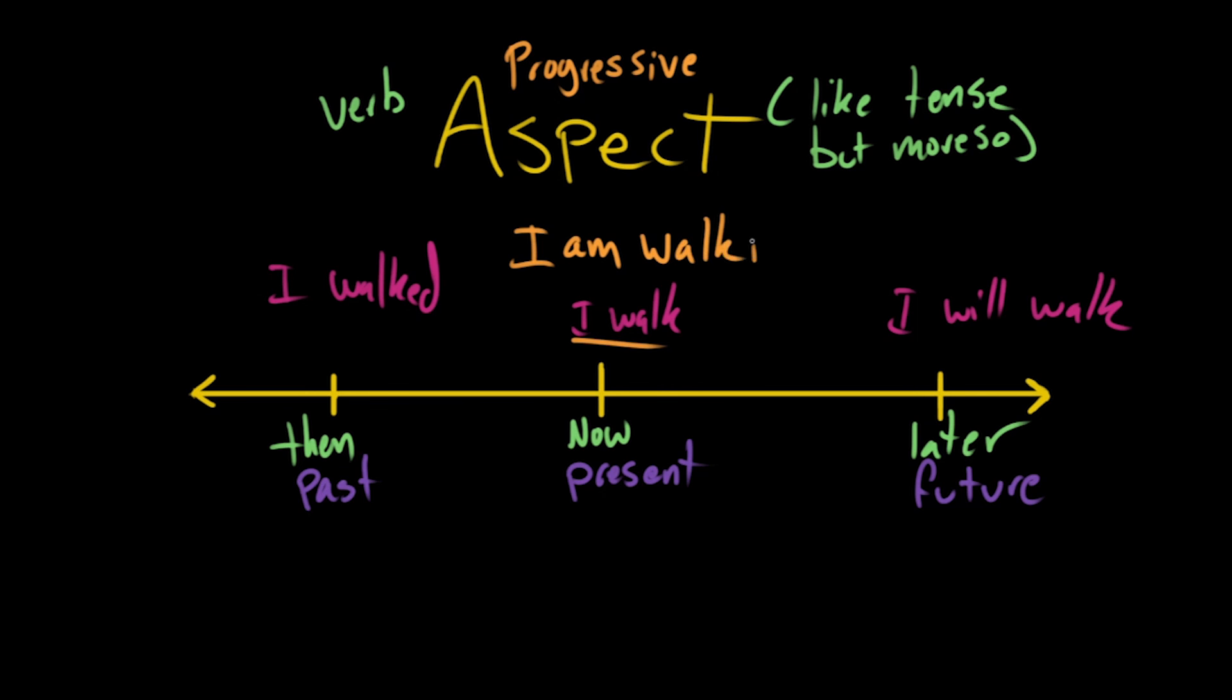So I walk becomes, in the present, I am walking. The way the progressive works is that it takes the form of to be for whatever the subject of the sentence is, in this case I, and it changes the verb into an ing verb. That's what it does, that's what the progressive does.